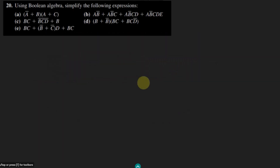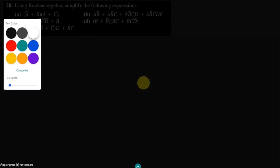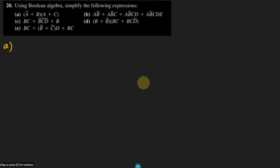Welcome back guys, this is question 20 and here we are asked to find the simplified version of these expressions using Boolean algebra. Let us solve part A first. We have the expression (a' + C)(a + C). This is the expression that we have, and now according to the associative law, we can expand it.